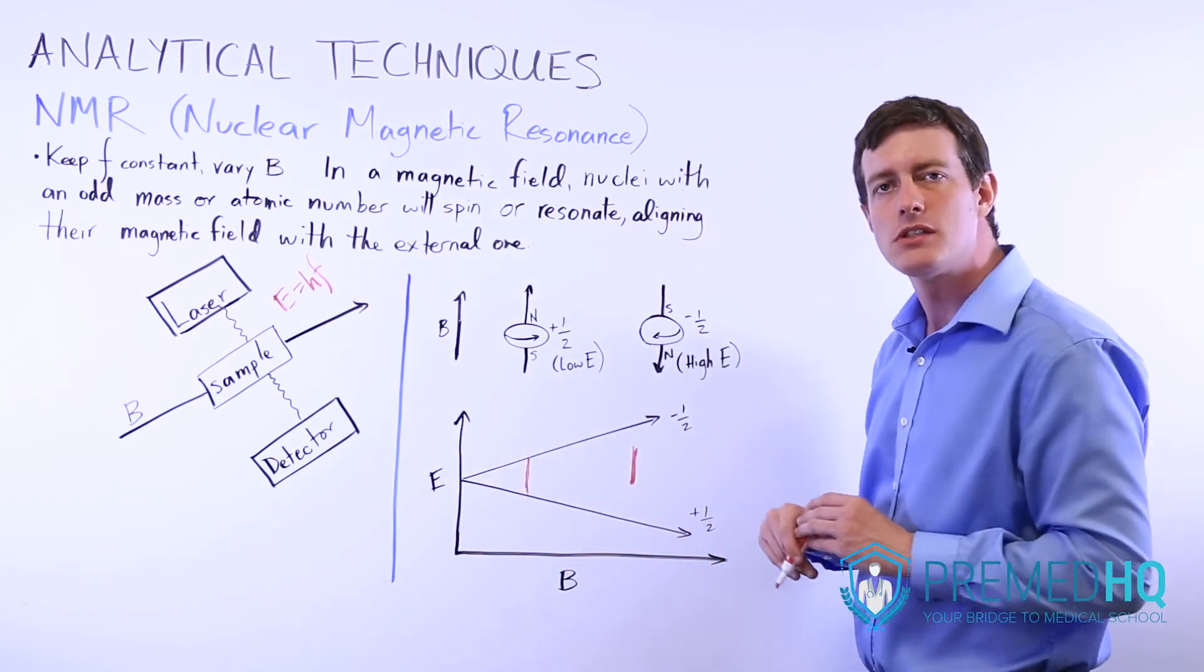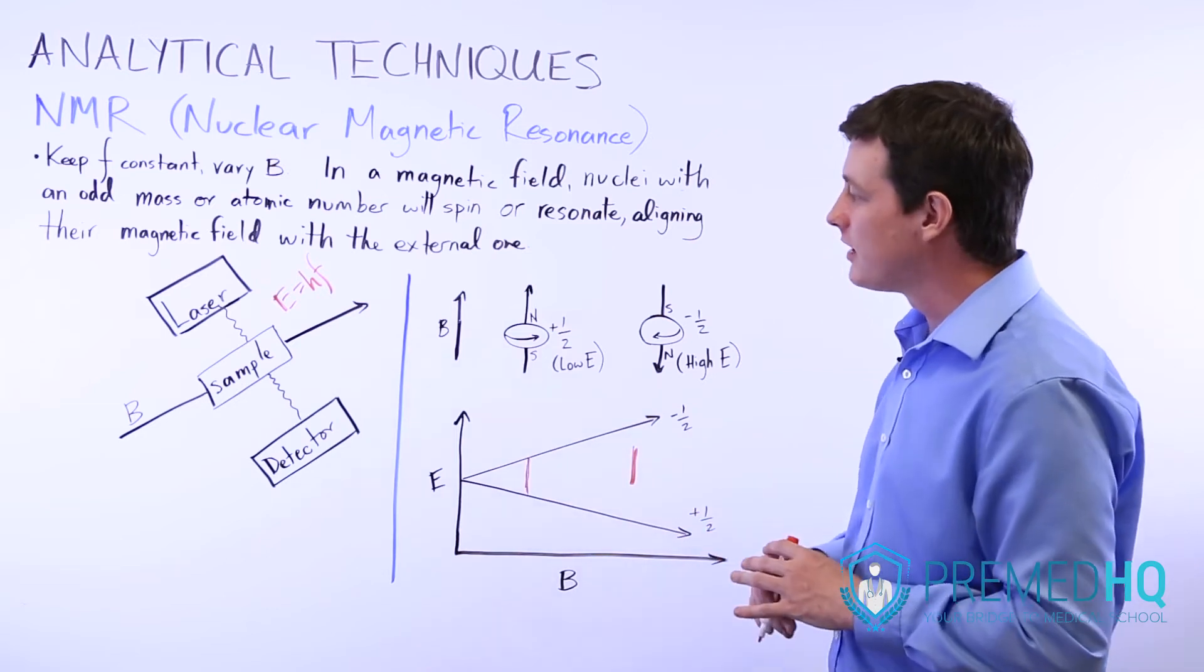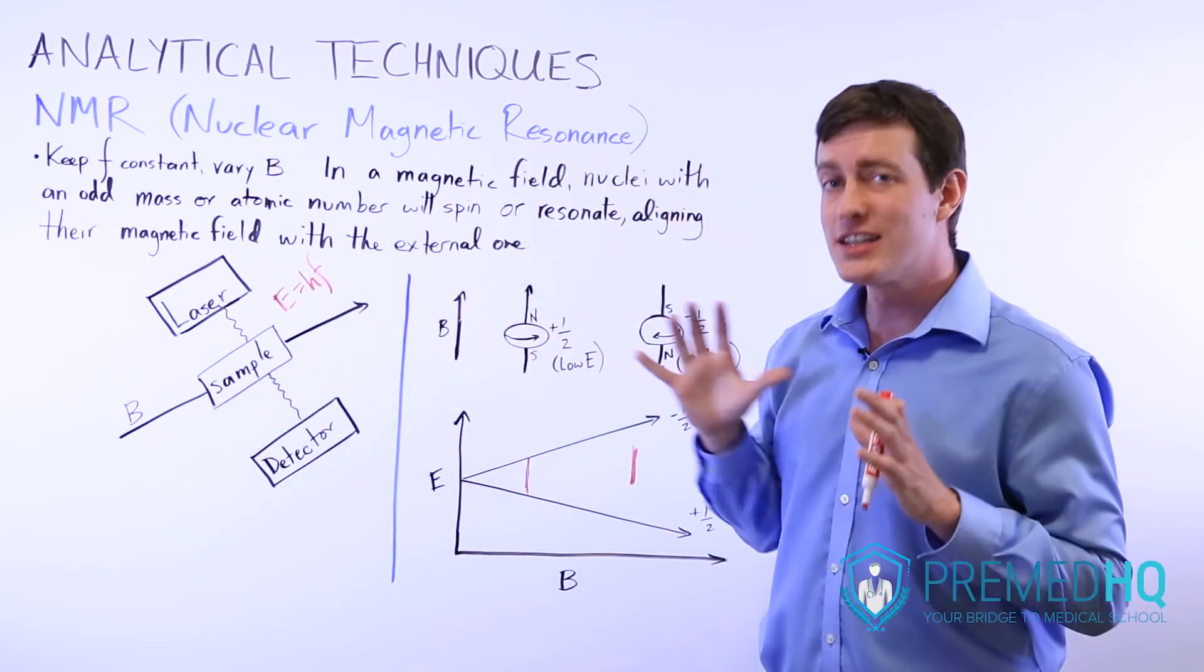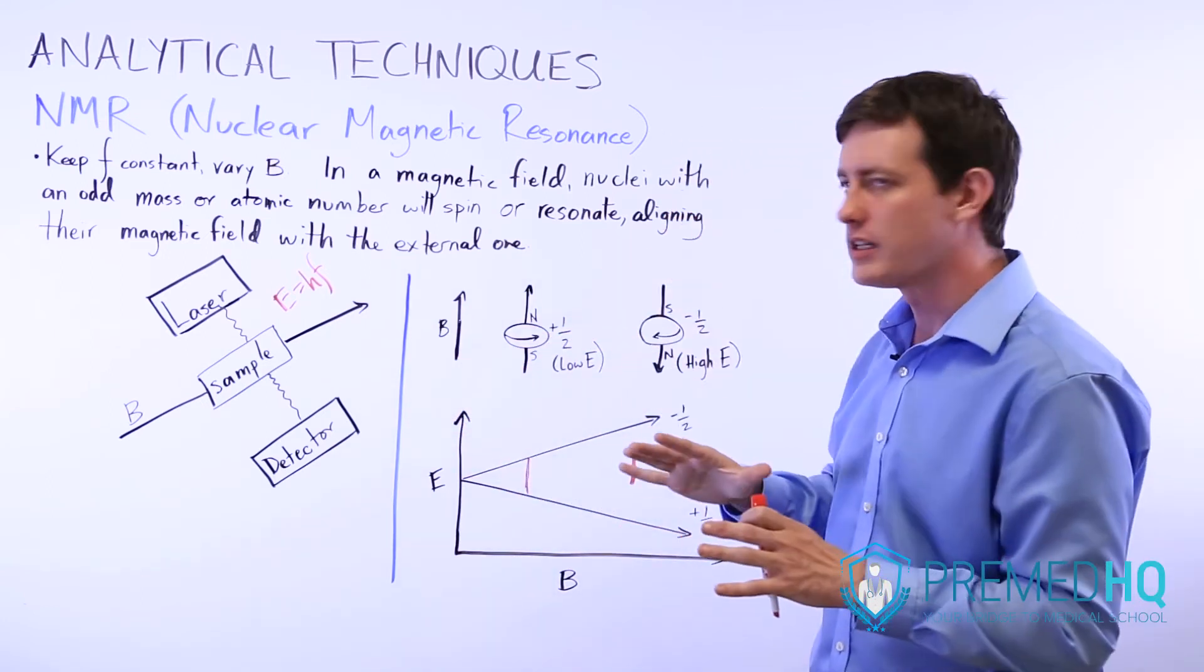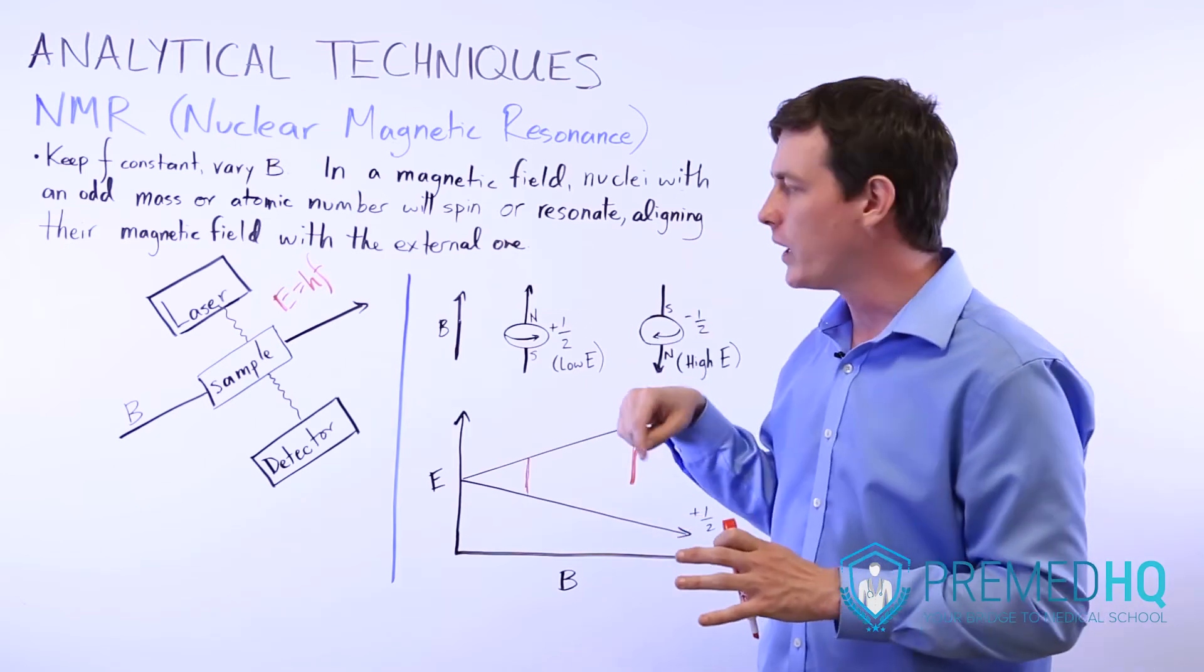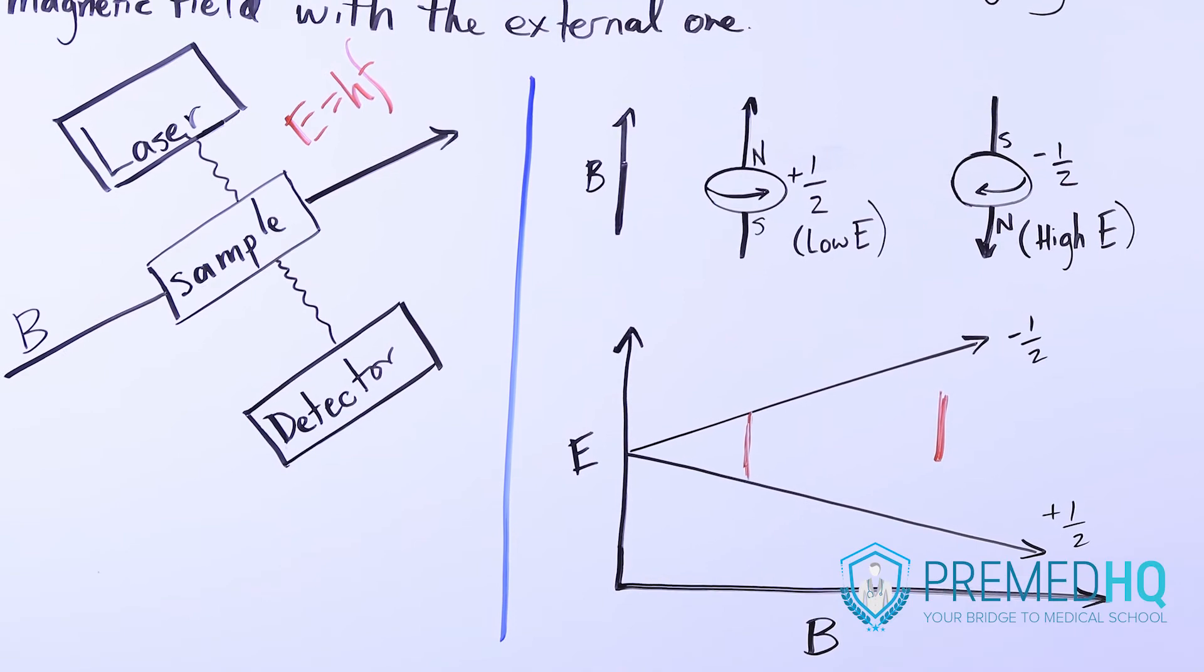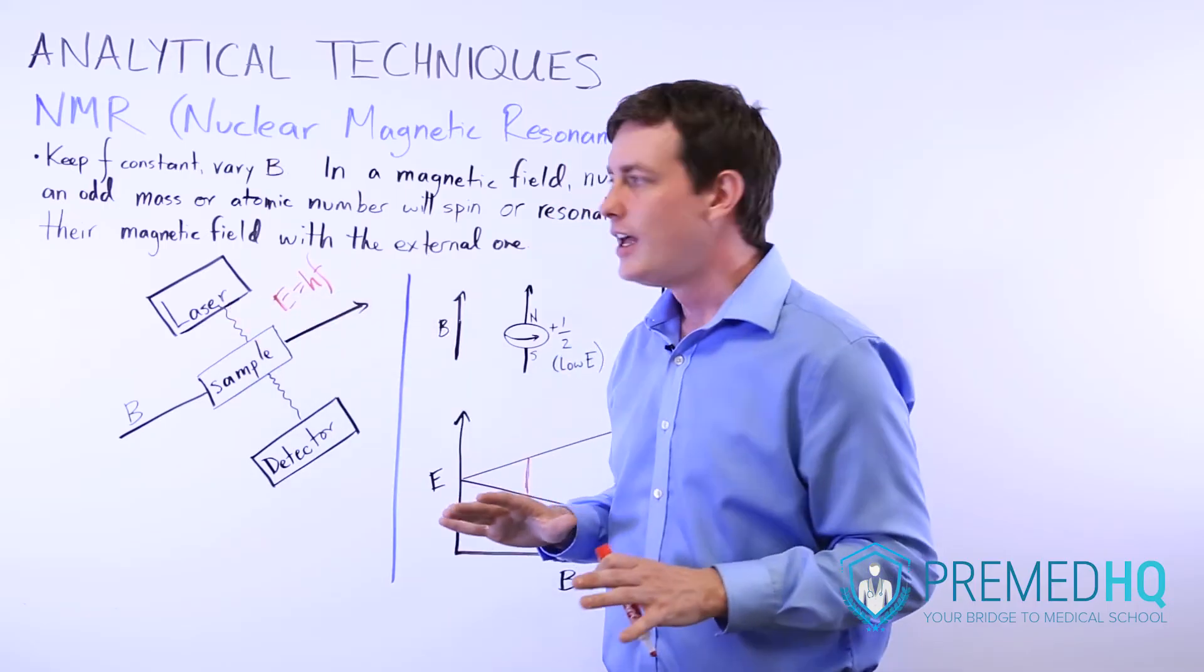But when you're running NMR, the key things to realize are that you need to have the external magnetic field because the external magnetic field is what allows it to spin one way, and then later on we can see what causes it to flip the other way. So you have this external magnetic field which you're varying, but you have a laser whose frequency you're keeping constant.